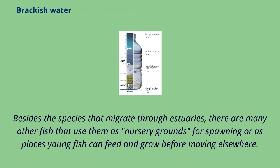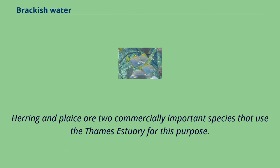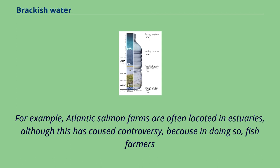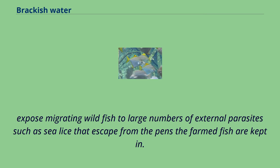Besides the species that migrate through estuaries, there are many other fish that use them as nursery grounds for spawning, or as places young fish can feed and grow before moving elsewhere. Herring and plaice are two commercially important species that use the Thames estuary for this purpose. Estuaries are also commonly used as fishing grounds and for fish farming or ranching. For example, Atlantic salmon farms are often located in estuaries, although this has caused controversy, because fish farmers expose migrating wild fish to large numbers of external parasites such as sea lice that escape from the pens the farmed fish are kept in.